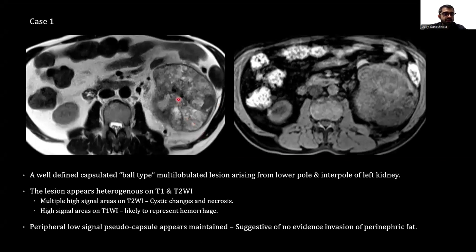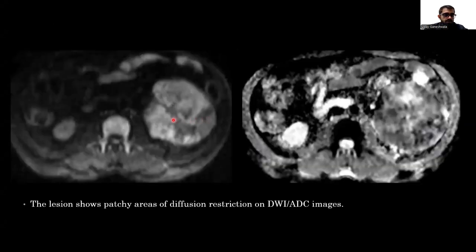Now let's start with the cases. We can see a well-defined encapsulated ball-type multi-lobulated lesion arising from the lower pole and inter-pole of the left kidney. The lesion appears heterogeneous on T1 and T2-weighted images. Multiple high signal areas on T2-weighted images represent cystic changes and necrosis, and high signals on T1-weighted images likely represent hemorrhage. Peripheral low-signal pseudo-capsule appears maintained, suggesting no evidence of invasion of perinephric fat. The lesion shows patchy areas of diffusion restriction with low ADC values on DWI-ADC images.